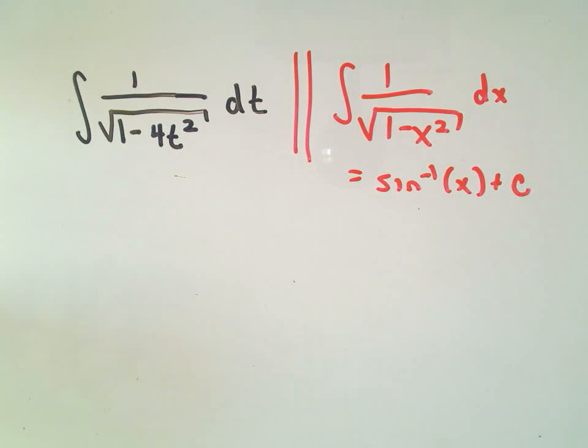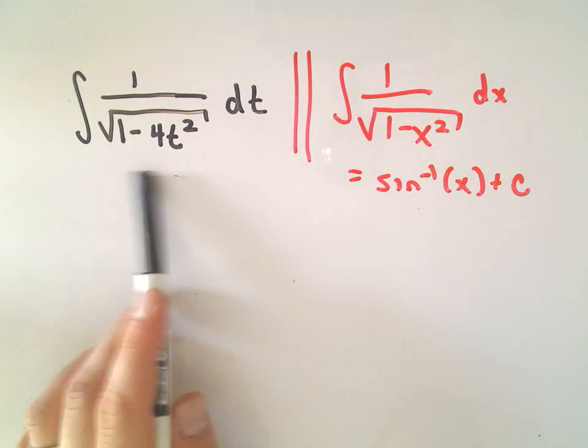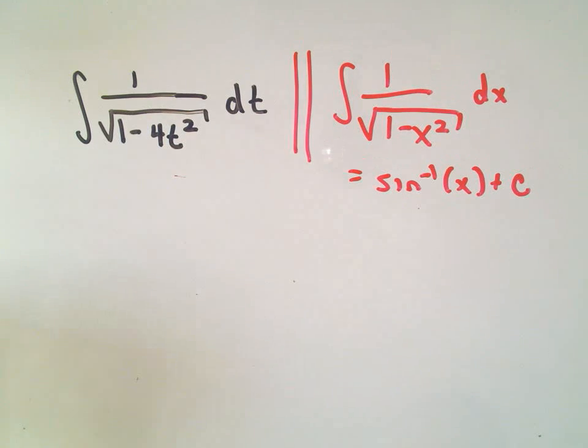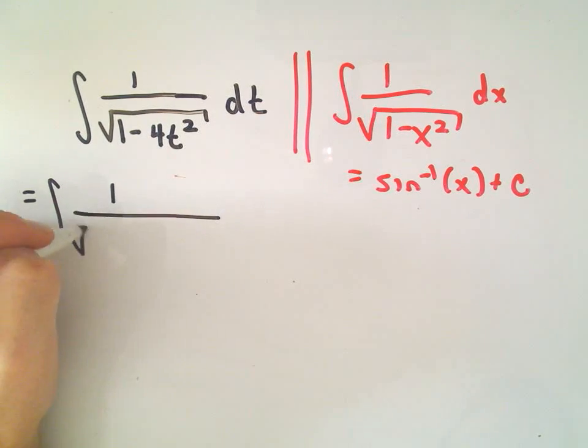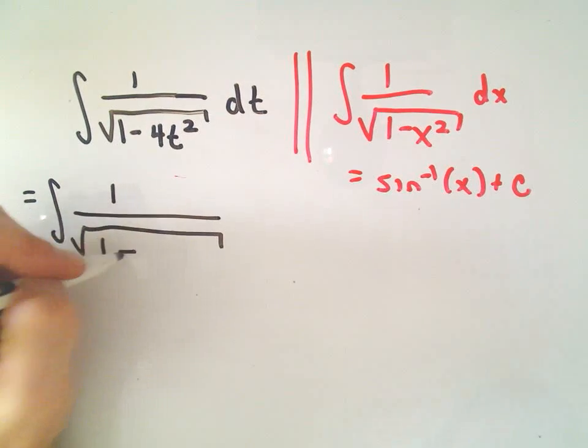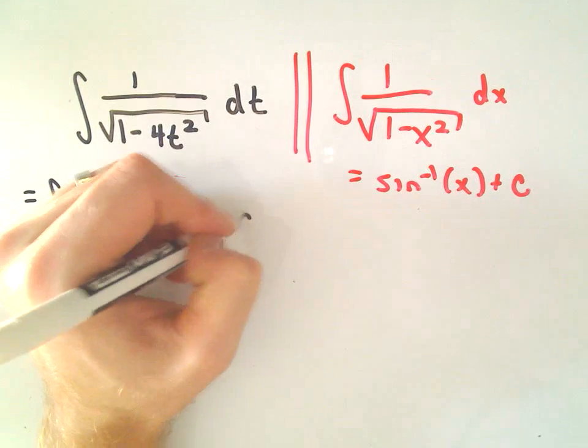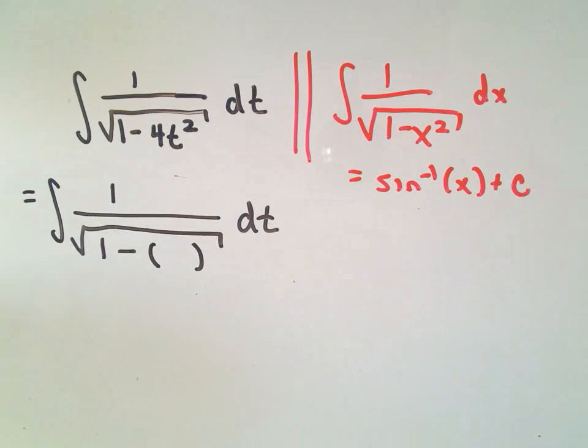So basically what I have to do is I have to make my integral look like this formula. And the way to do it is usually just going to be a little bit of algebra. Basically it boils down to a u substitution is really the gist of a lot of the problems.